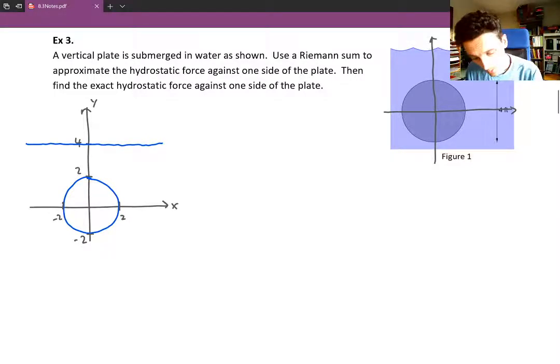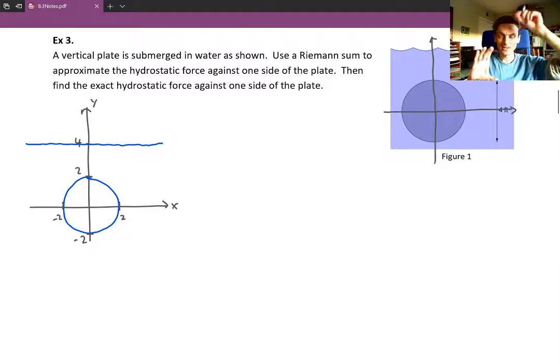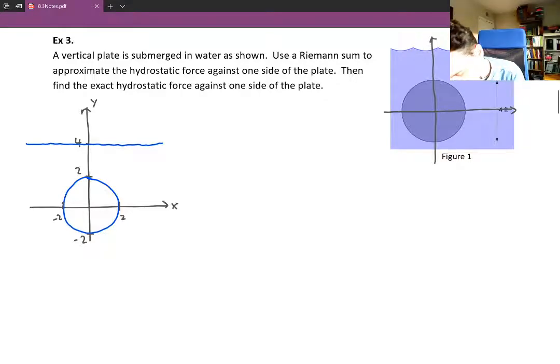Okay. So the top of the water is at 4. That's the water. And we're breaking up our plate into horizontal strips. Again, we're always doing it horizontal because then the horizontal strips have a constant depth. If we broke it into vertical strips, well then as you go up and down that vertical strip, the pressure is changing. The depth is changing and so the pressure is changing. And that's really hard to calculate.